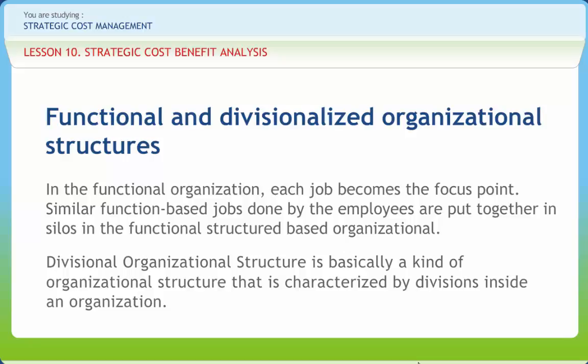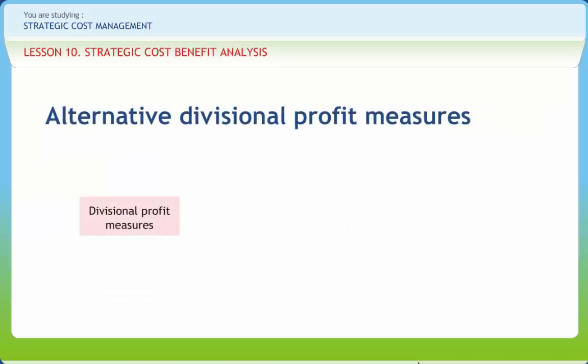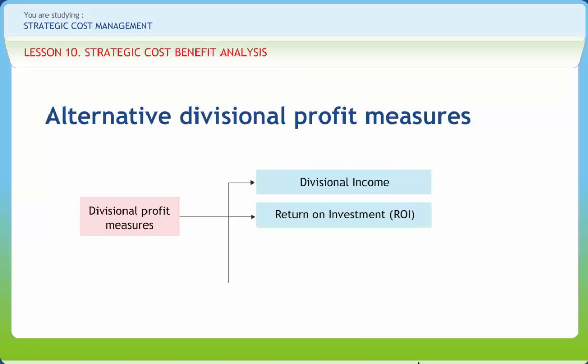The alternative divisional profit measures are: first, divisional income. It is a measure of divisional performance that is analogous to corporate net income for evaluating overall company performance. Divisional income is most meaningful as a performance measure when compared to the same division in prior periods or to budgeted income for the division. Divisional income provides a useful overall approximation of the success of a firm's past investment policy by providing a summary measure of the ex-post return on capital invested.